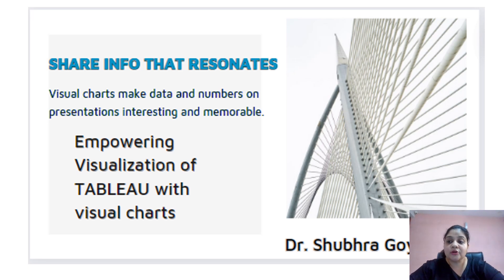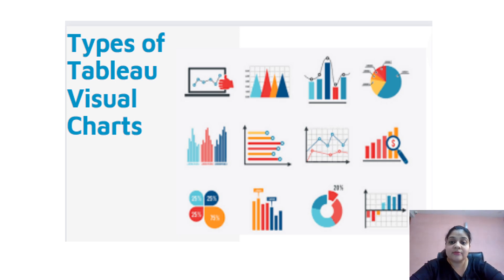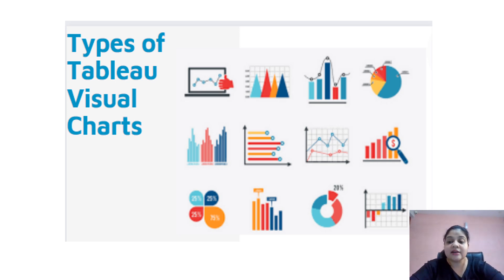So let's see what different types of charts we have. We have line charts, cone charts, bar charts, and line charts in combination with bar charts. We have histograms, pie charts, bubble charts, geographical maps, and a number of other charts which help us to visualize our data better and in an effective manner.